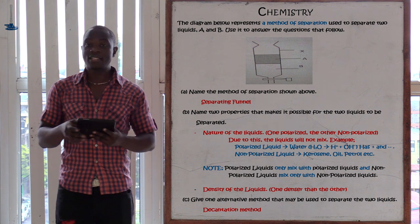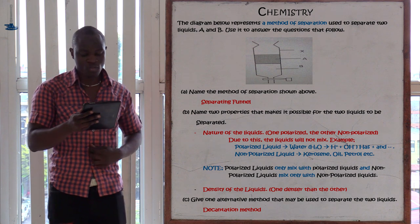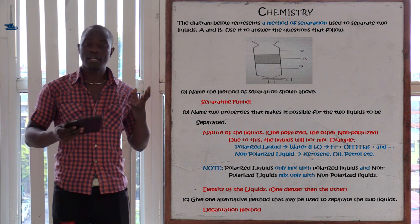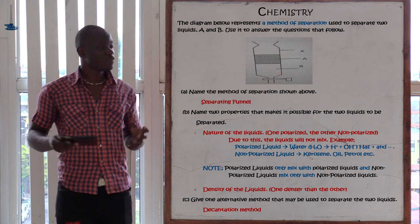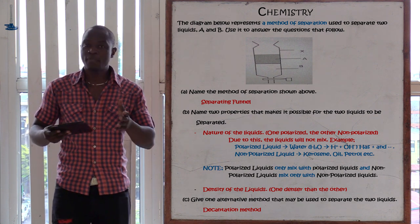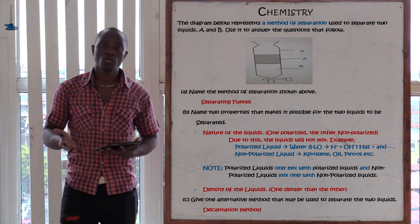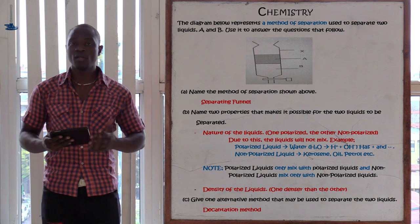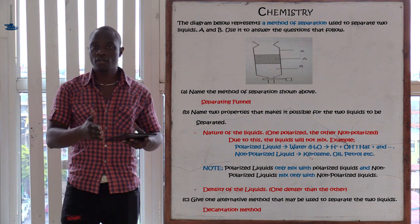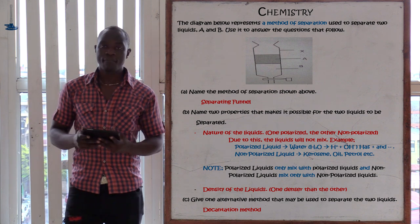Letter C is asking: give one alternative method that can be used to separate the two liquids, apart from the separating funnel. We have the decantation method. We can also use decantation to separate immiscible liquids. Remember, the separating funnel is always the best method for separating immiscible liquids, but we can also use decantation for that process.